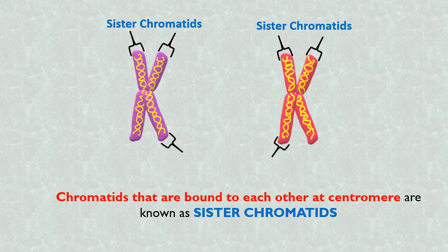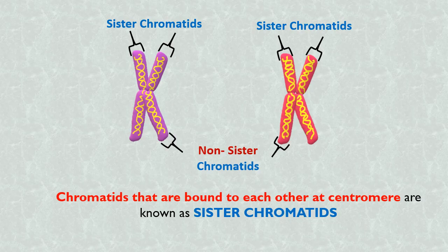But a chromatid of the purple chromosome and a chromatid of the pink chromosome are non-sister chromatids.